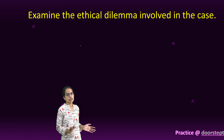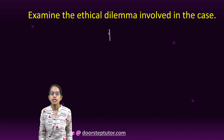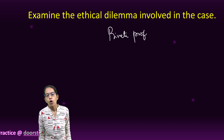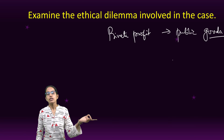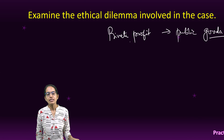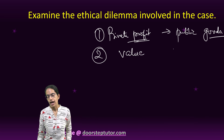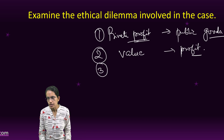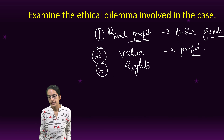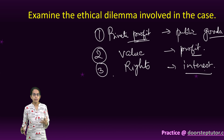The last question is: what is the ethical dilemma? The core dilemma is whether the company is thinking about private profit or public good. When the company sells export-rejected products in India, it is prioritizing private profit over public good. The second dilemma is that it is not after values, only after profit. The third is whether it is exercising its rights or merely protecting its own interests.